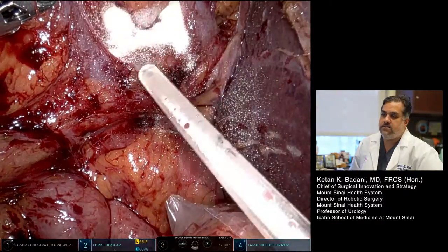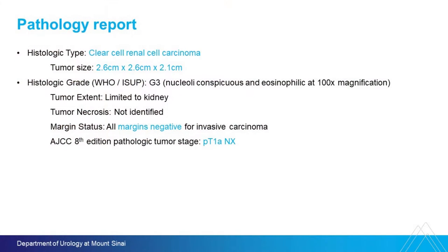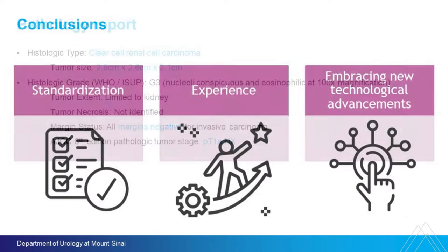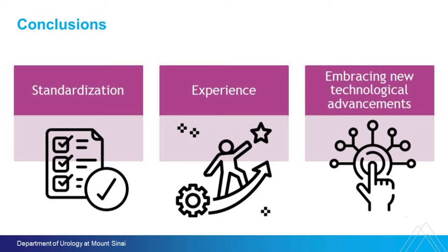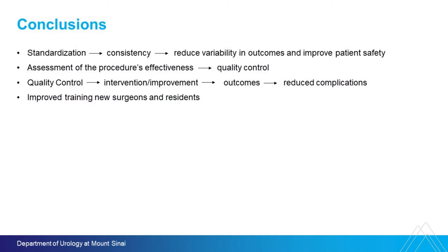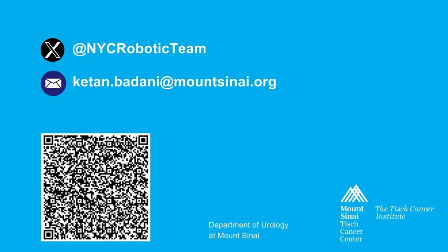In this case, recurrent clear cell renal cell carcinoma — we had a good outcome. My ending point is that if you standardize your approach to robotic partial nephrectomy, you'll be able to tackle low, intermediate, and high complexity tumors using the same approach. That's going to increase your experience, you'll do more challenging cases, and more patients will benefit from partial nephrectomy over radical nephrectomy as your experience and standardization improve. Keep doing it, keep taking good care of your patients, and standardize your robotic partial nephrectomy approach. Thanks for inviting me to showcase our technique — feel free to reach out with any messages. Take care and have a great day.